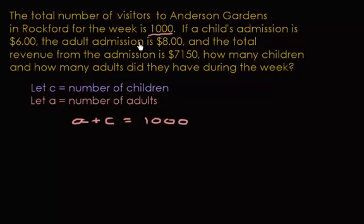The other restriction is the money. How much is it per adult? It's $8 per adult plus $6 per child. This represents the total amount of revenue coming in. For example, if there were 2 adults, 8 times 2 is 16, so we would make $16 from the adults. This represents the total revenue from adults and children, which equals $7,150.